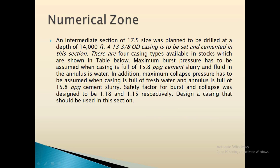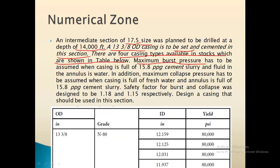The question states: an intermediate section of 17.5-inch size was planned to drill at a depth of 14,000 feet. A 13 3/8-inch outer diameter casing is to be set and cemented in this section. There are four casing types available in stock as shown in the table. The maximum burst pressure has to be assumed when the casing is full of 15.8 ppg cement slurry and the fluid in the annulus is water.